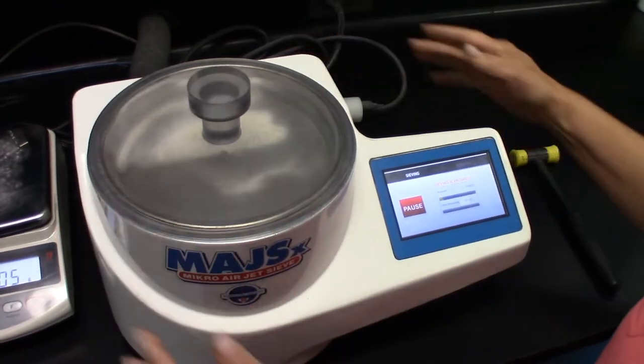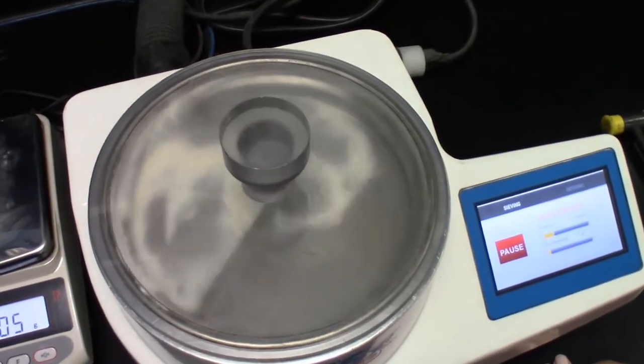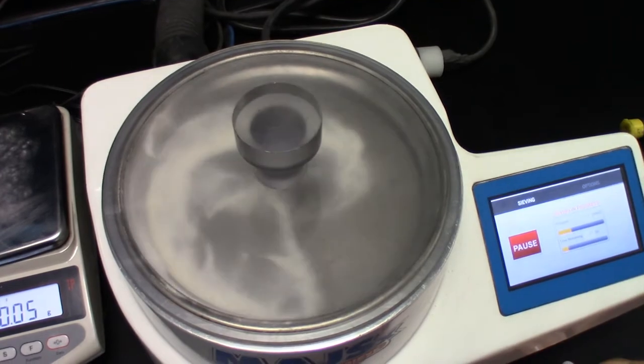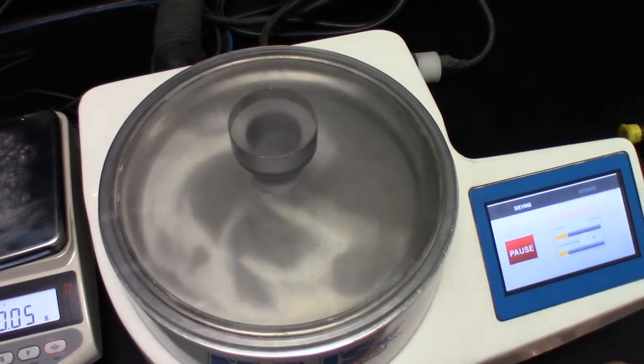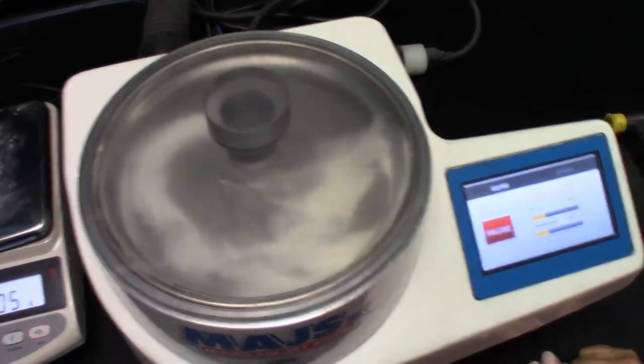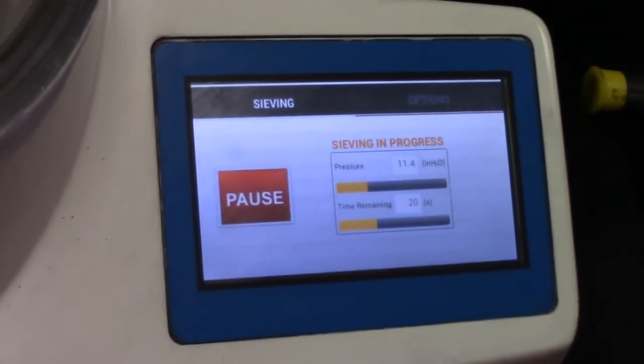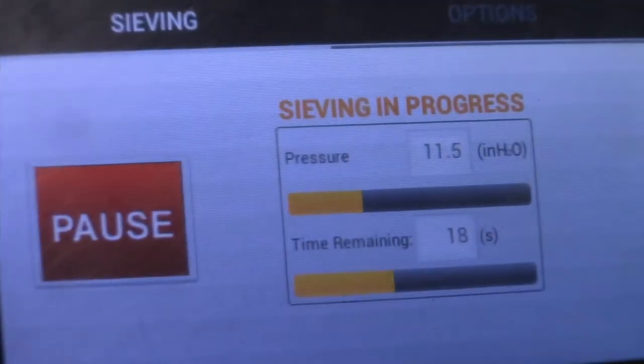With the basic version of the JetSiv, there are two parameters: the sieving time and the vacuum pressure. Vacuum pressure can be between 8 and 16 inches of water. I've got it set at 12.